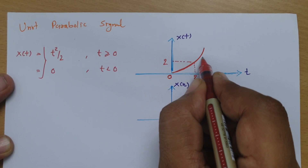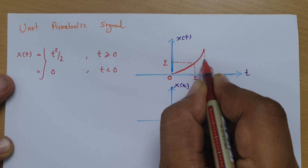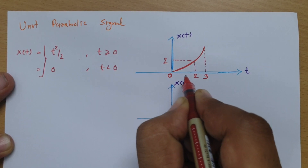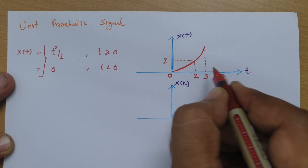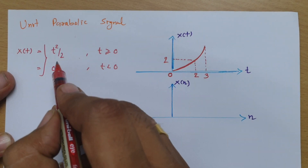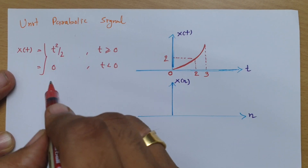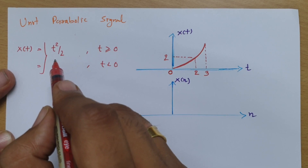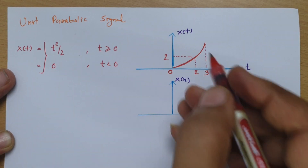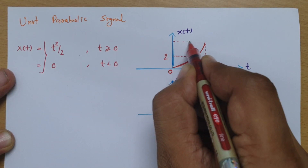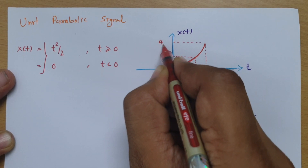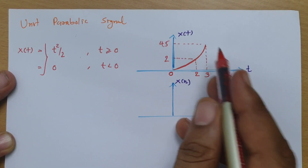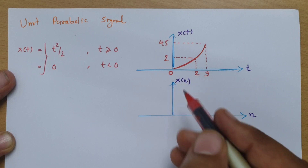For t equals 3, we calculate 3 squared by 2, which is 9 by 2, giving 4.5. So at t equals 3, the value will be 4.5. That is how these values are computed along the parabolic curve.